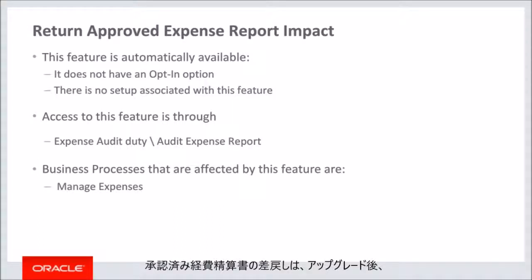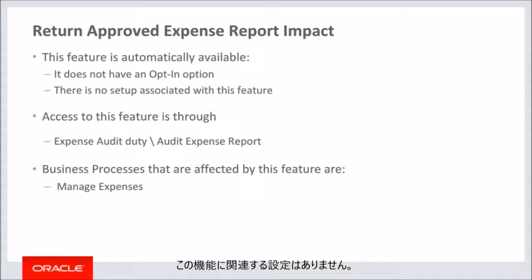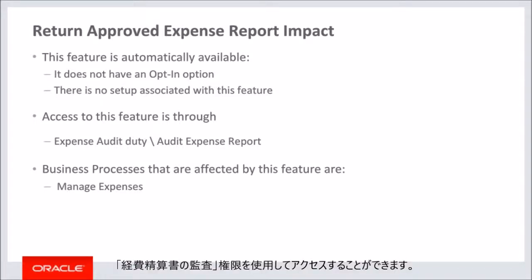The feature return approved expense report is automatically available after the upgrade and does not have an opt-in option. There is no associated setup with this feature. It can be accessed using the audit duty rule and privilege audit expense report. The business process associated with this feature is manage expenses.